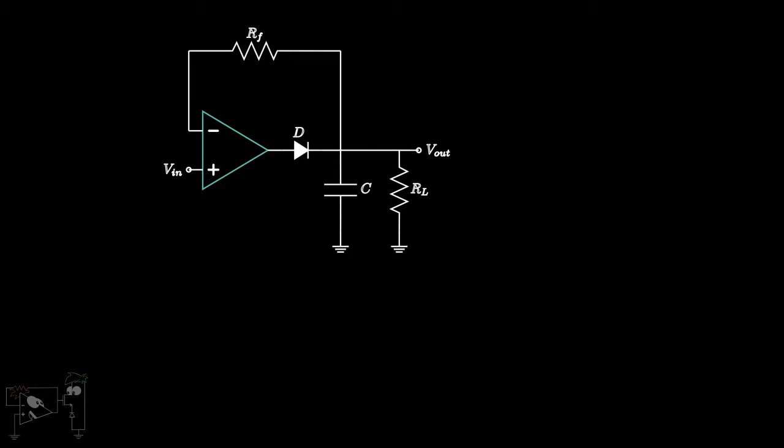RF is the feedback resistance whereas RL is the load resistance. RL can correspond to an external load resistor or the input resistance of the voltmeter connected. We saw in the video on precision half-wave rectifiers that there is negligible voltage drop across the super diode.